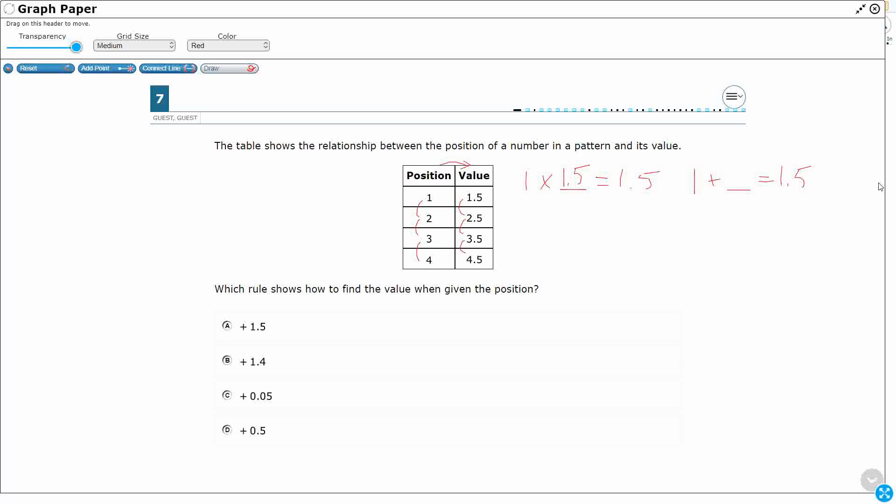1 plus what makes 1.5? Okay, so it's not a full 1, because 1 plus 1 makes 2. So it's going to be less than 1, right? It's going to be 0.5.